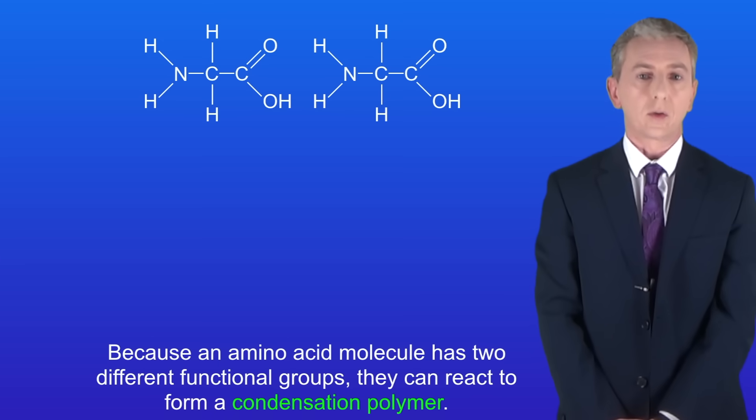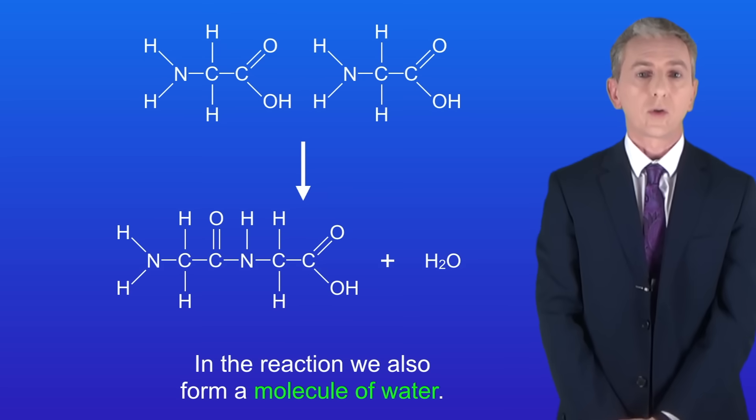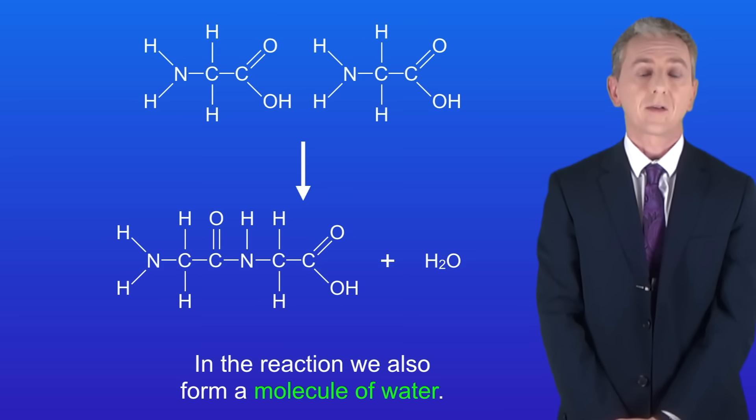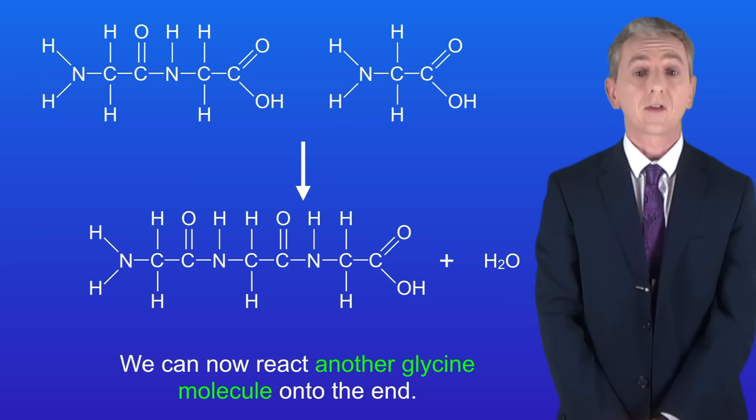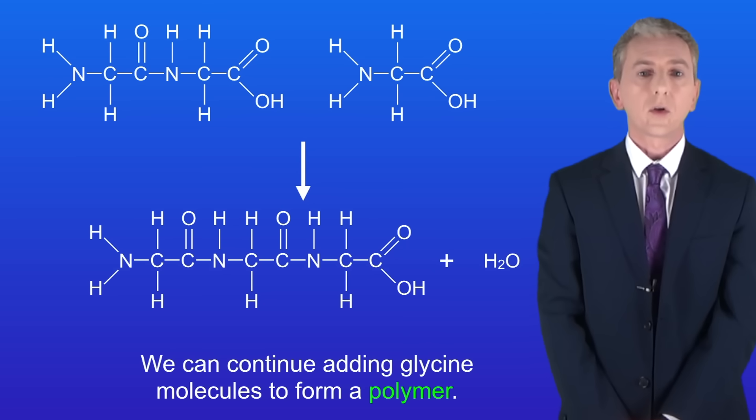I'm showing you two glycine molecules here. We can react these two glycine molecules together like this and in the reaction we also form a molecule of water, and that's how we know that this is condensation polymerization. Now the key point here is that we can now react another glycine molecule onto the end like this, and again as you can see we've made another molecule of water. We can continue adding glycine molecules to form a polymer.